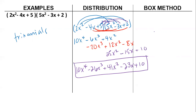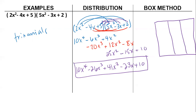If you choose to use the box method, you need to make a 3 by 3 box. You'd have 2x squared, negative 4x, and 5 along one side, and 5x squared, negative 3x, and 2 along the other, then just fill it in.